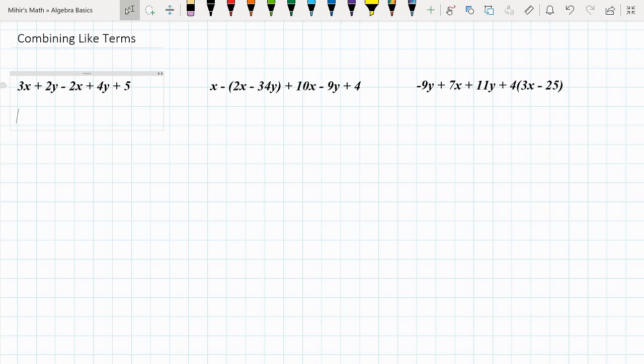So let's combine all the like terms of x to start. We have 3x and we have minus 2x. And for y, we have minus, no, we just have 2y and we have 4y. And then finally, for a coefficient, we just have 5, so we don't need brackets.